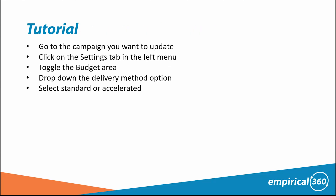This is the outline of the tutorial — it's very straightforward, it is a simple checkbox. All you do is go to the campaign you want to change settings on, go to the settings tab on the left, toggle the budget area, look for the dropdown for delivery method options, and select the standard or accelerated option.